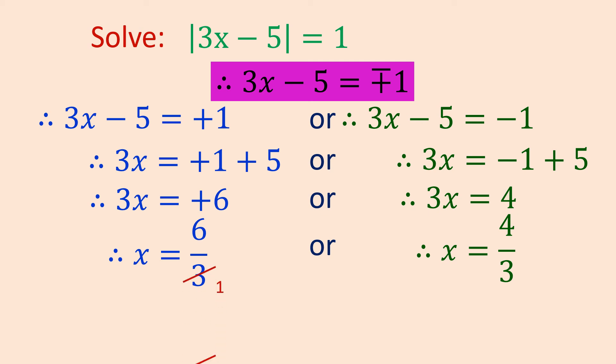So we can reduce 3 one time and 3 two times. So x equals 2, or x equals 4 upon 3.